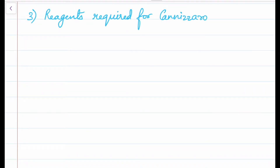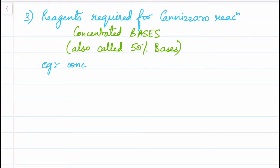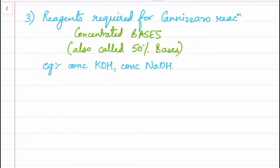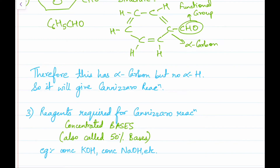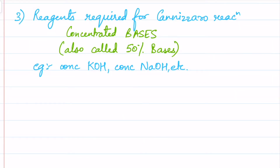Now we move on to the reagents required for Cannizzaro. The Cannizzaro reaction will happen only in the presence of concentrated bases, also called 50% bases — for example, concentrated KOH, concentrated NaOH, etc. That is your third difference between aldol and Cannizzaro reactions: for aldol reaction you need dilute alkali, and for Cannizzaro reactions you need concentrated bases.